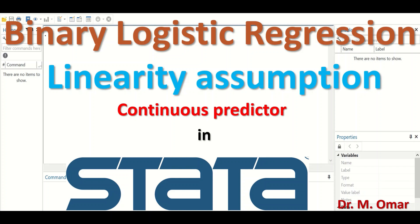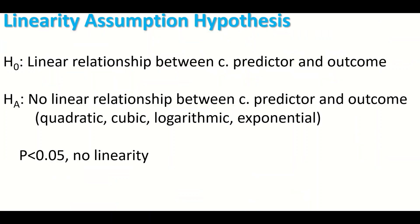When including a continuous predictor in a regression model and testing whether there is an association between a continuous predictor and an outcome, the assumptions for binary logistic regression must be met. One key assumption is that there is a linear relationship between the continuous predictor and the outcome. To test that the linearity assumption is fulfilled, a hypothesis must be generated.